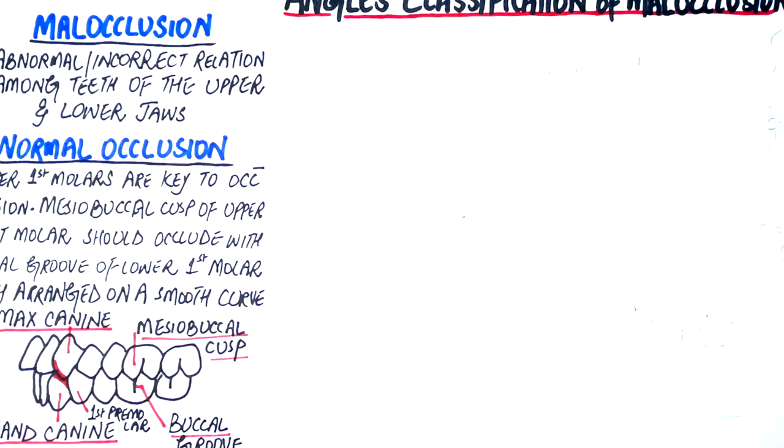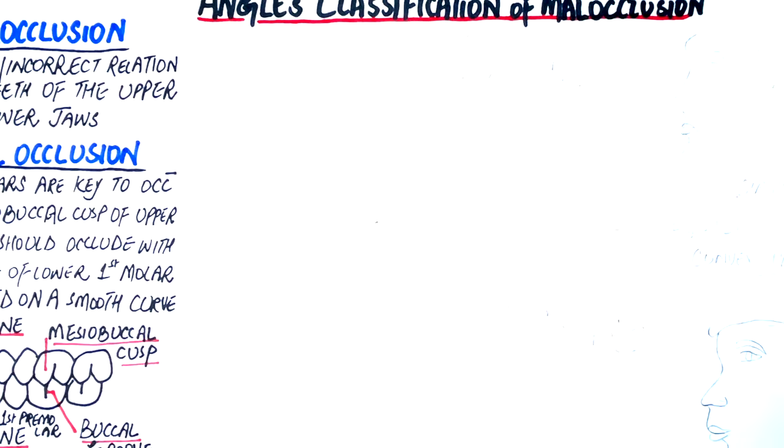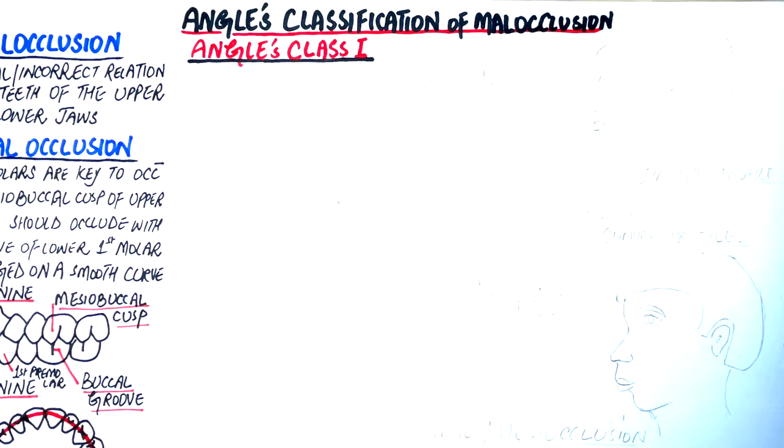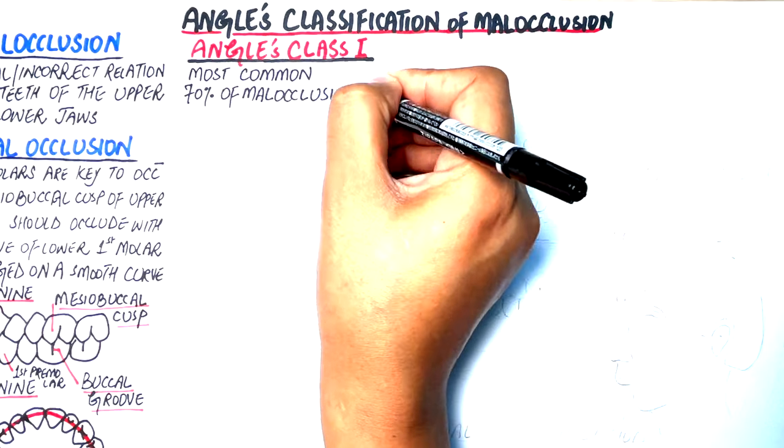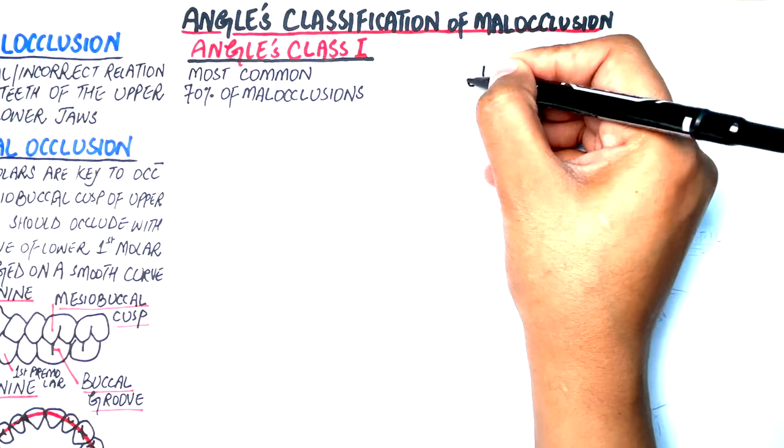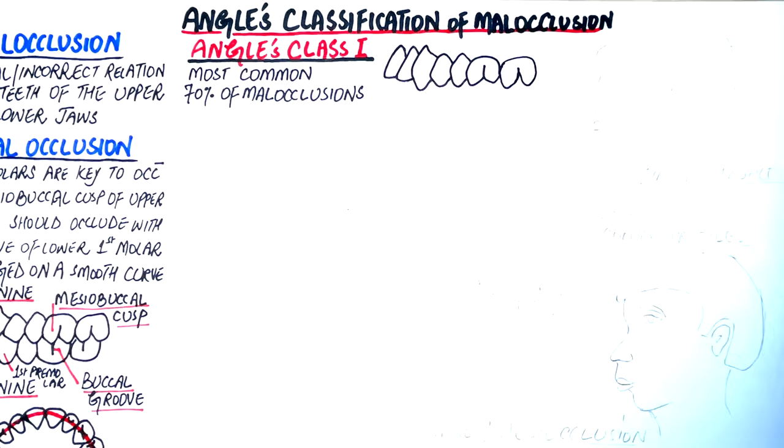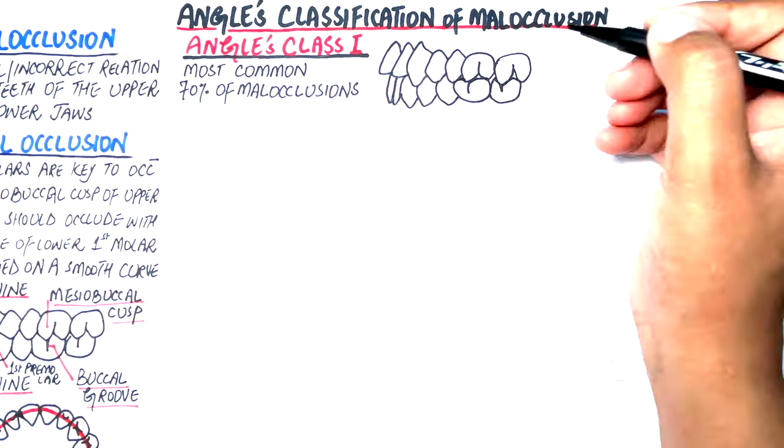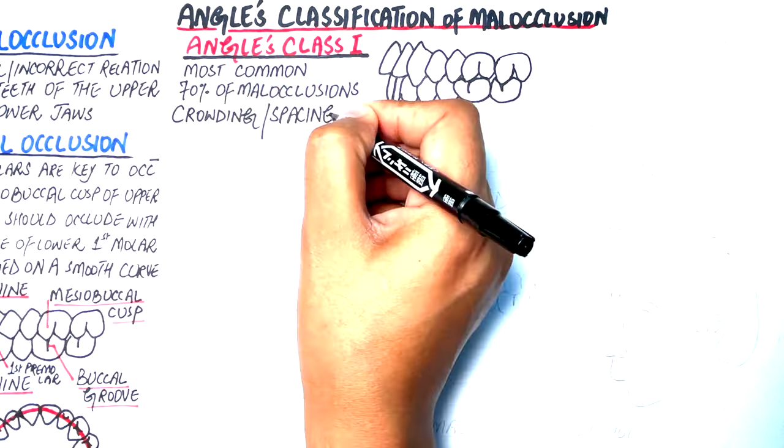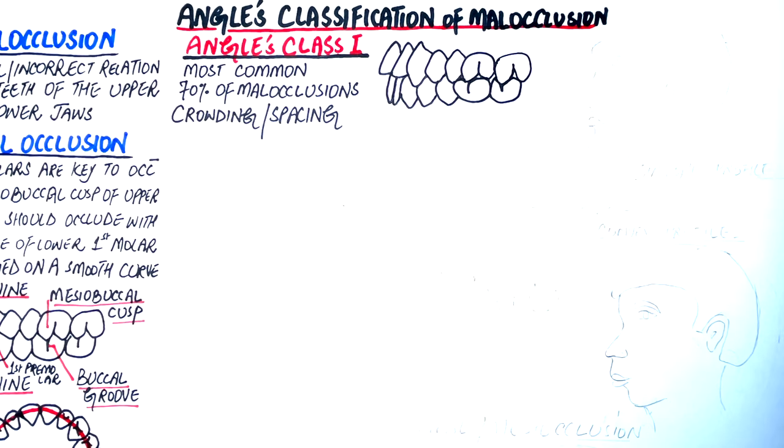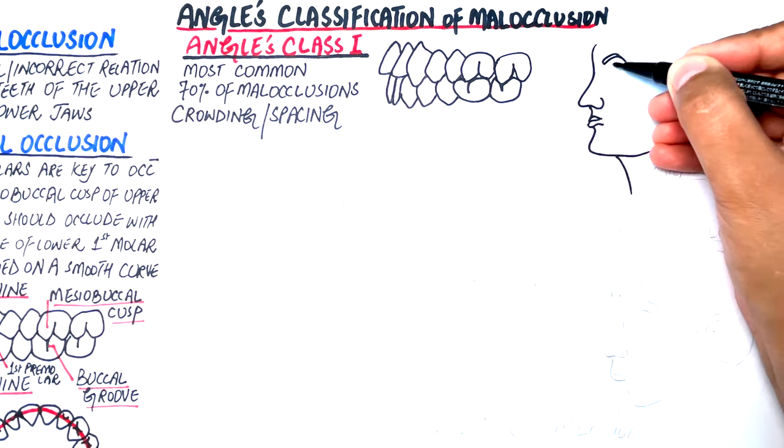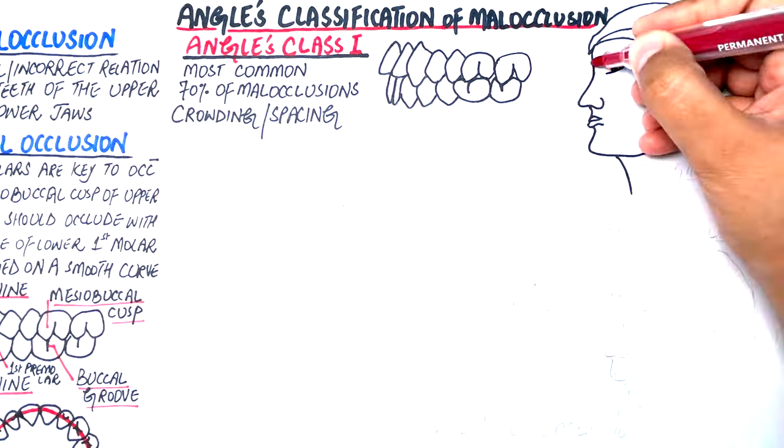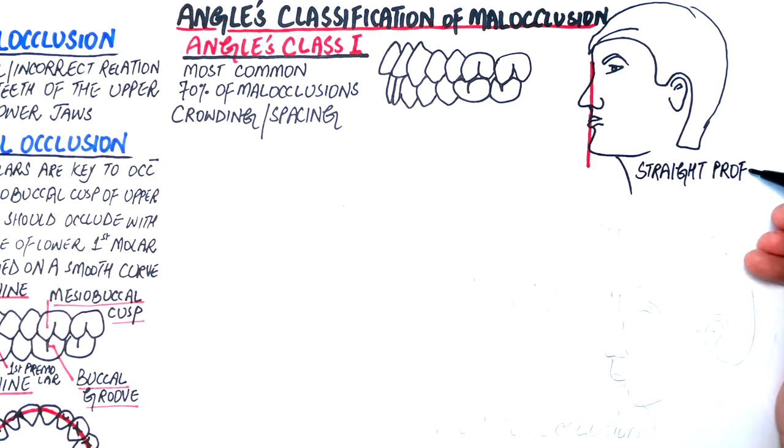Let's look into Angle's three classes of malocclusion. In Angle Class 1, which is the most common type and accounts for about 70% of the malocclusions, the molar and canine relationship resembles what we have already seen in normal occlusion, except for the misaligned or malplaced anterior teeth, resulting in either crowding or spacing of the teeth. The patient in Class 1 malocclusion will have an almost straight facial profile.